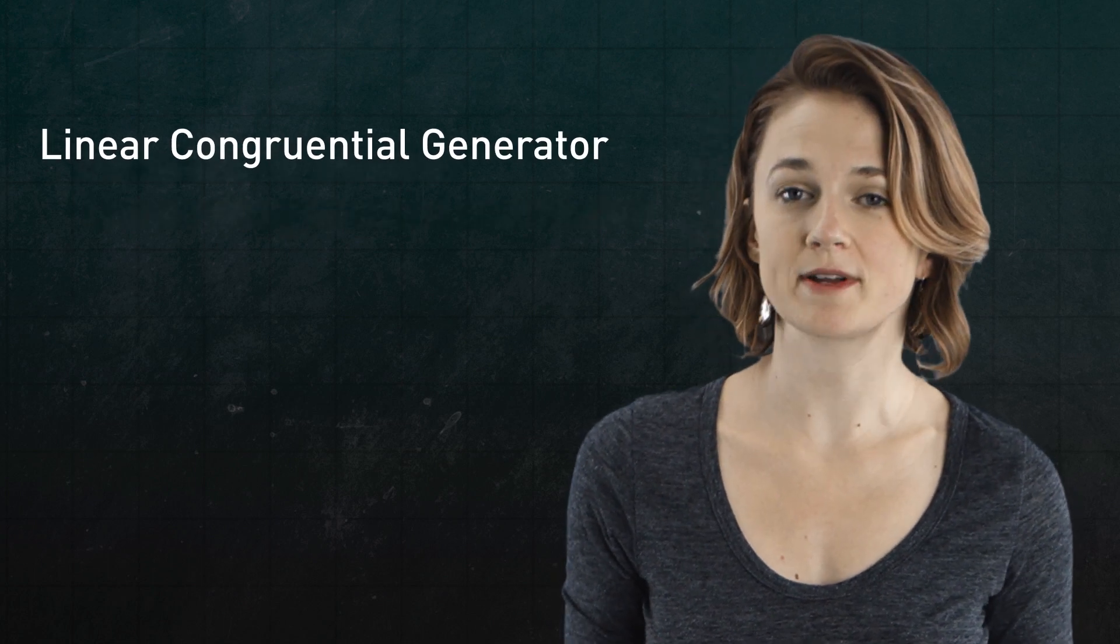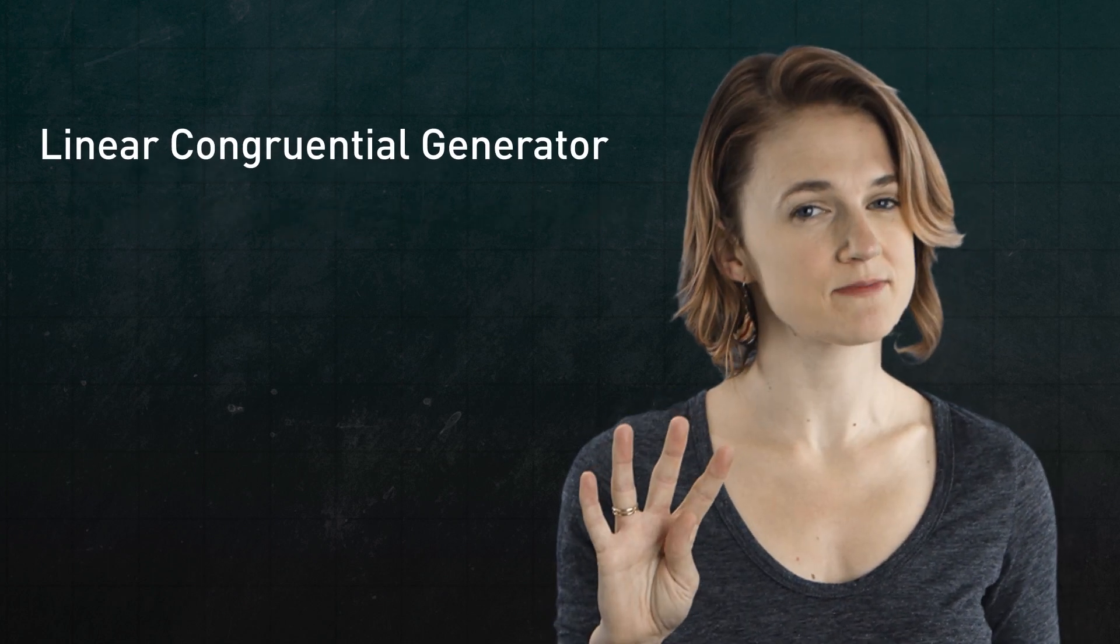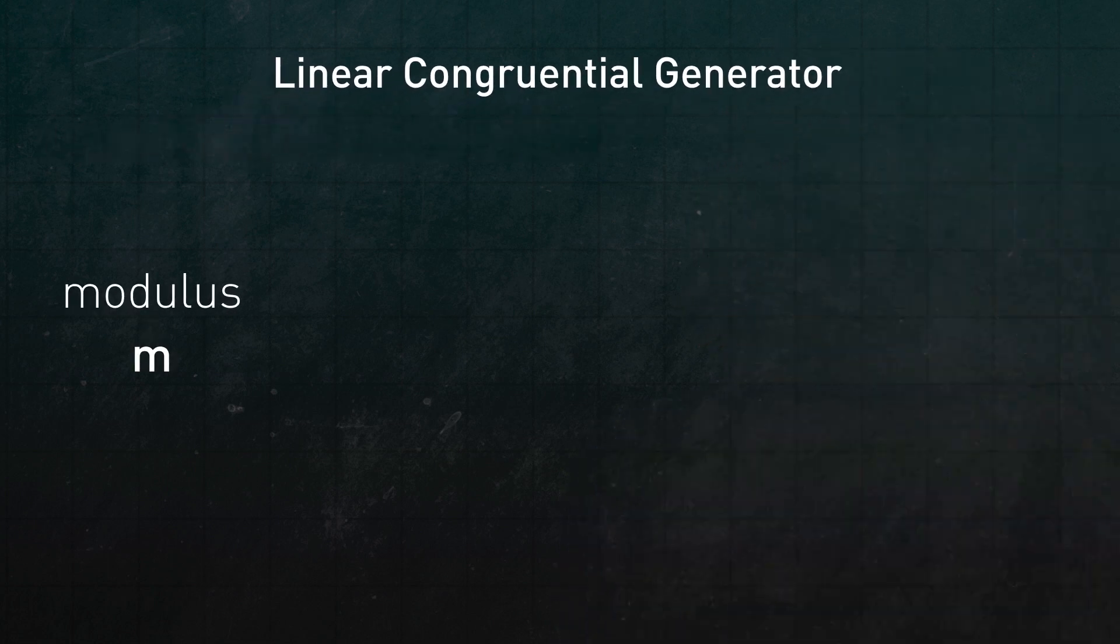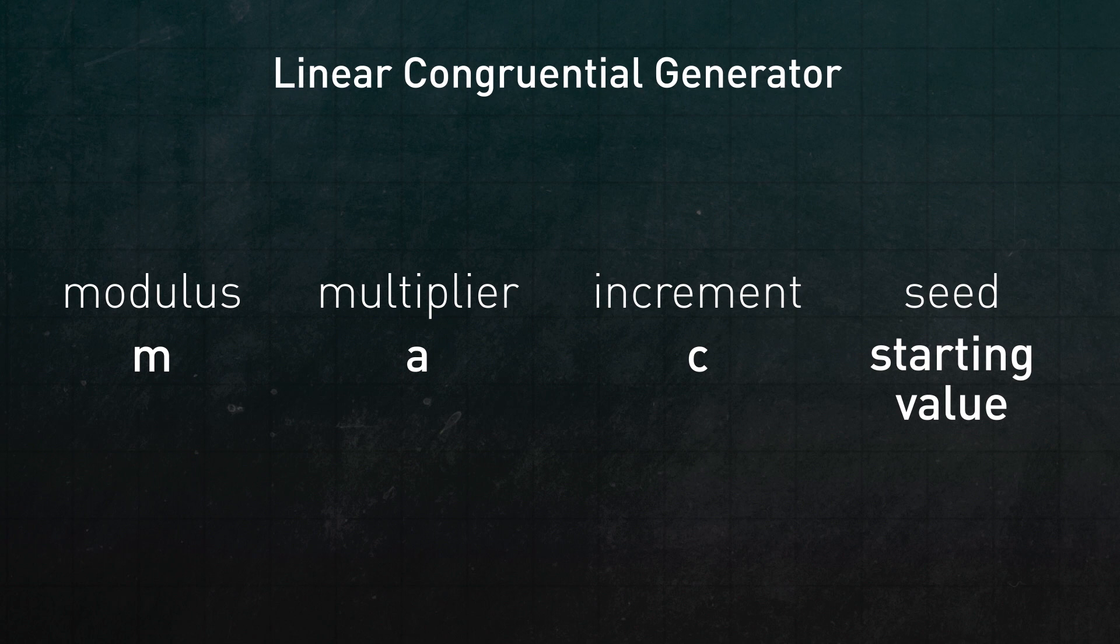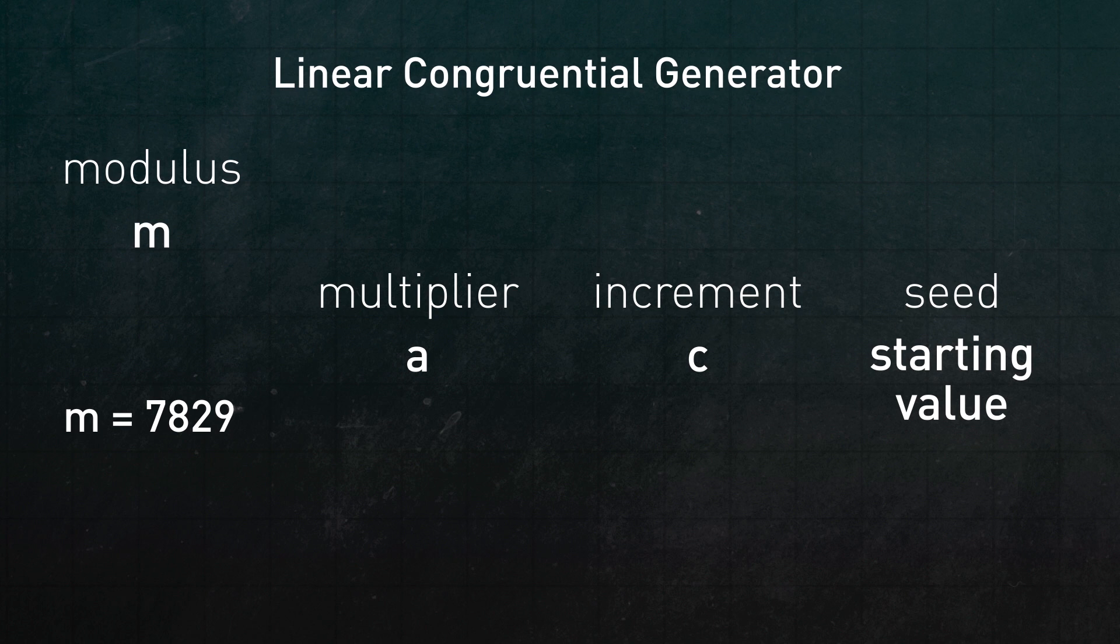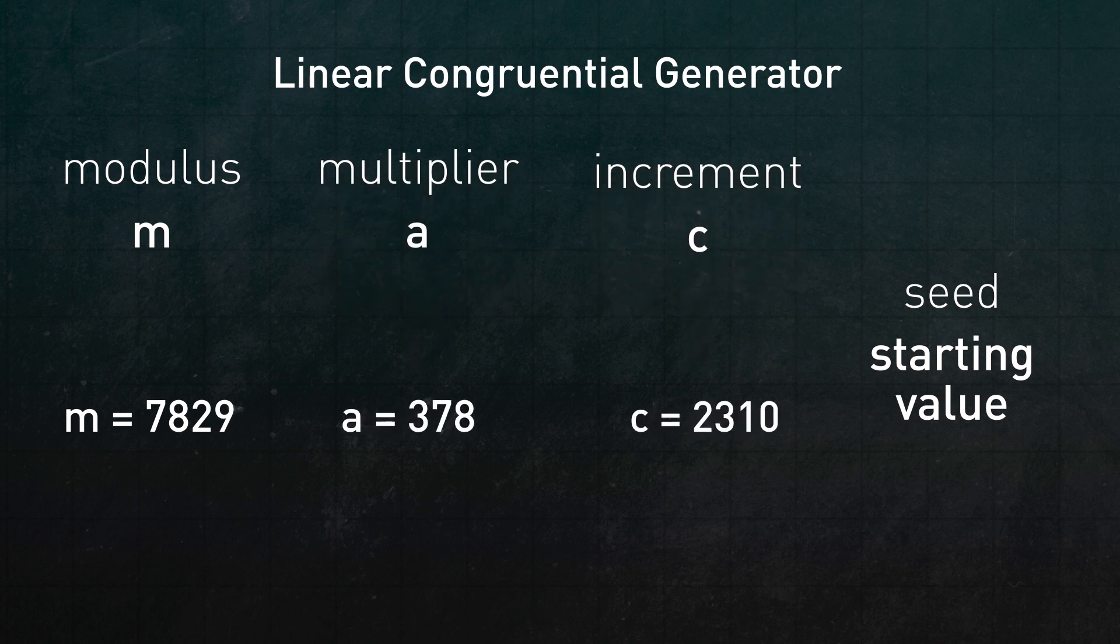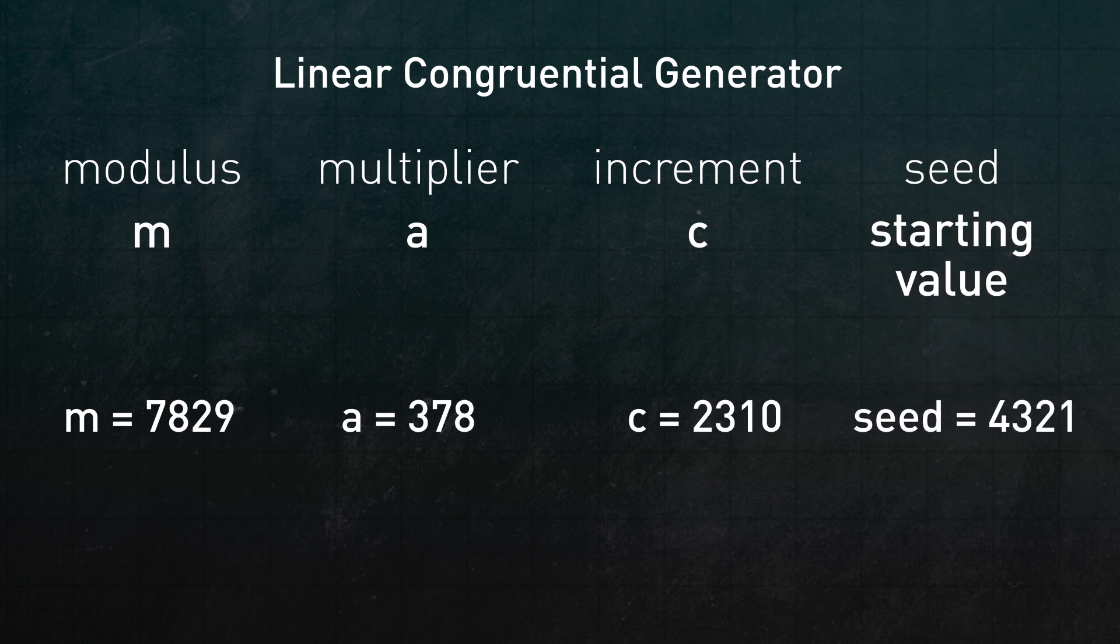The linear congruential generator has four inputs. The modulus M, the multiplier A, the increment C, and the seed, the sequence's starting value. We'll run with the example M equals 7,829, A equals 378, C equals 2,310, and the seed is 4,321 again.